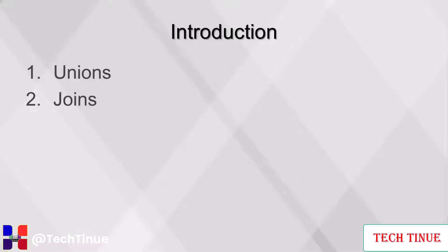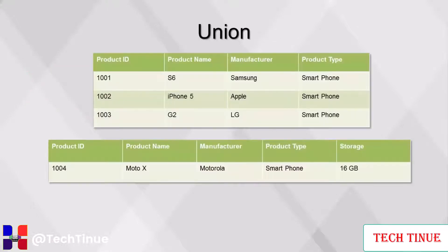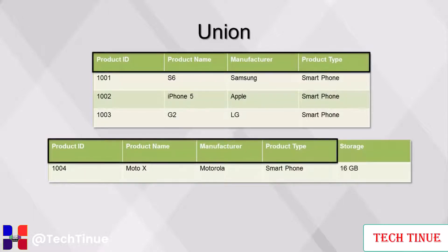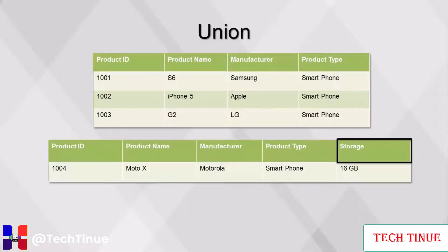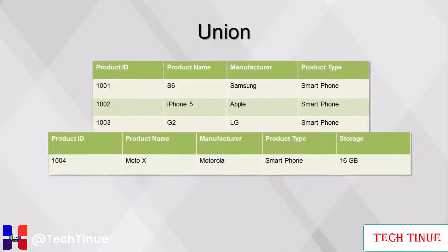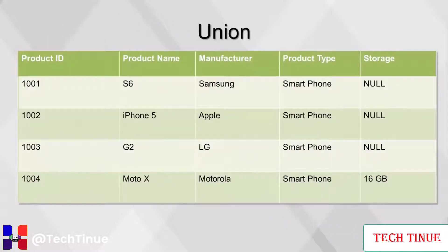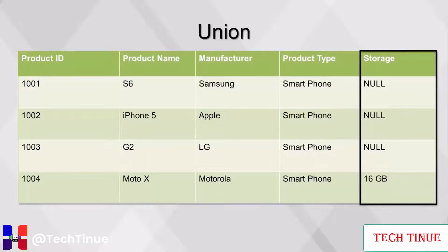This video will cover unions and joins. Union is also referred to as appending, concatenating, or combining two tables vertically, or simply adding rows. The tables should have the same variable names, types, and sizes. Variables that are in only one table will receive null or missing values for the rows from the tables that do not contain them. In this union, our two tables — one with three rows and one with one row — will combine to create one larger table with four rows. Storage was not contained in both original tables, so the rows that do not contain data for storage will have null or missing values.